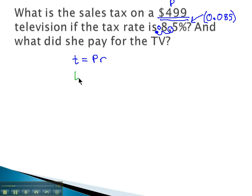So we simply have to plug those into the equation. T is equal to the price, which we found to be 499. R is the rate, written as a decimal, which means we are writing 0.085.